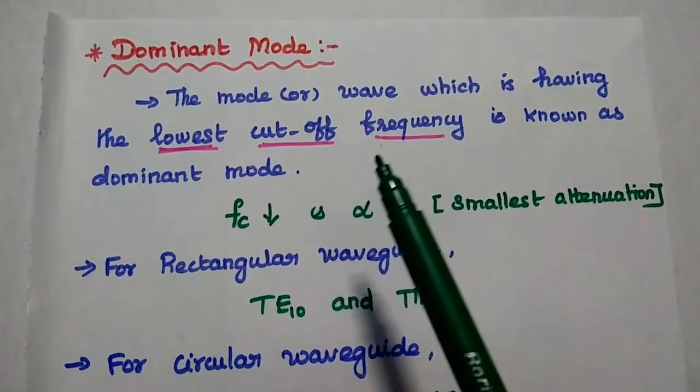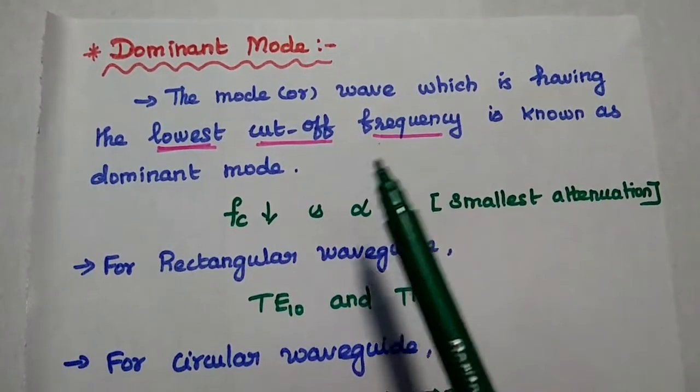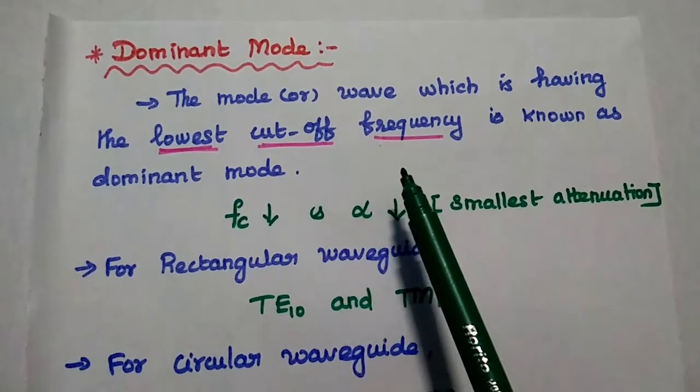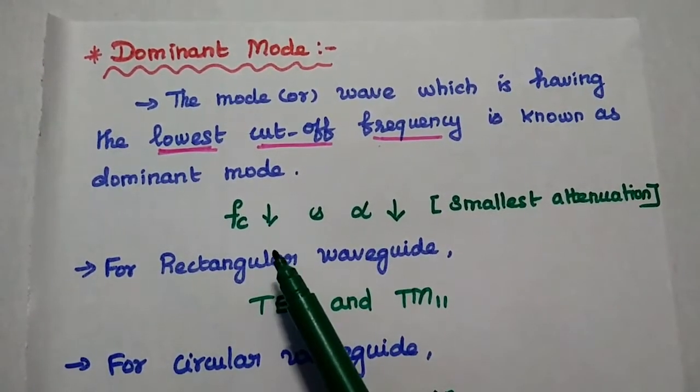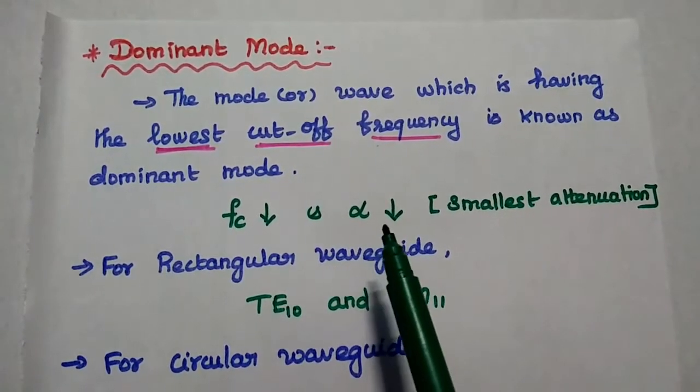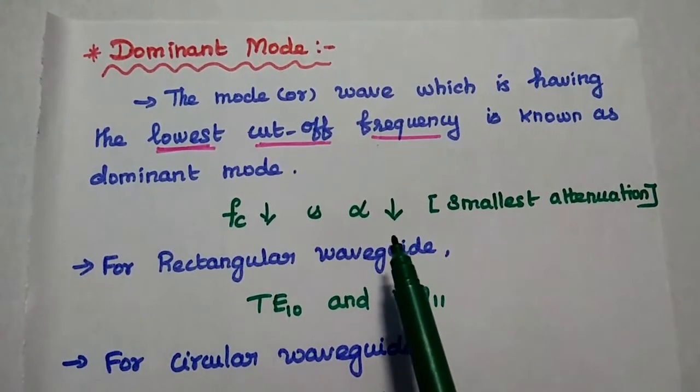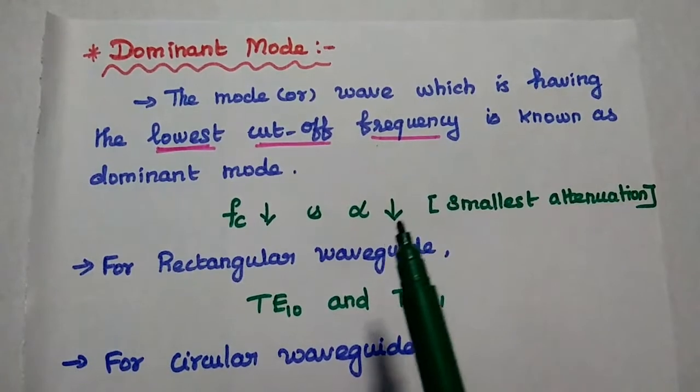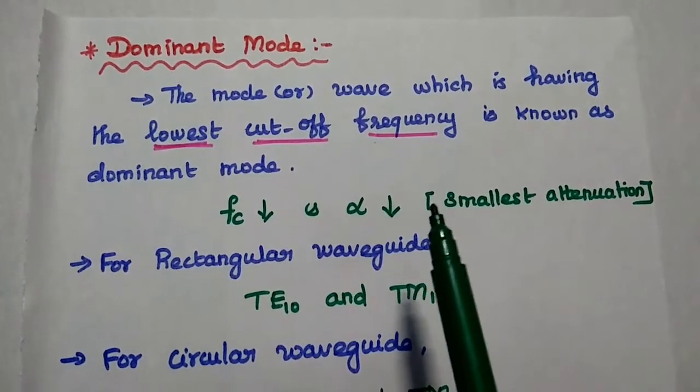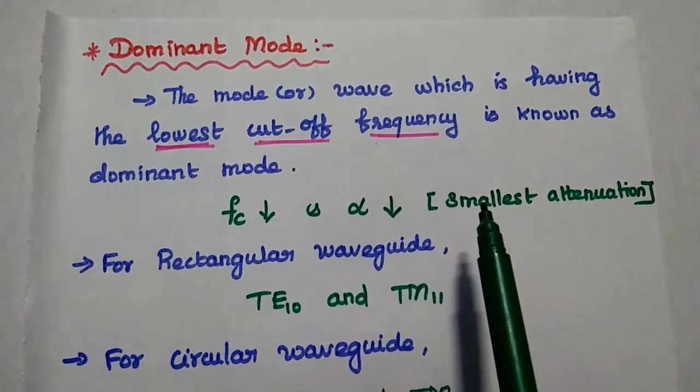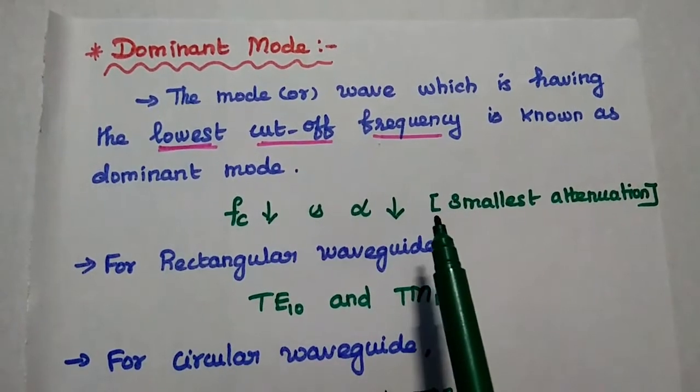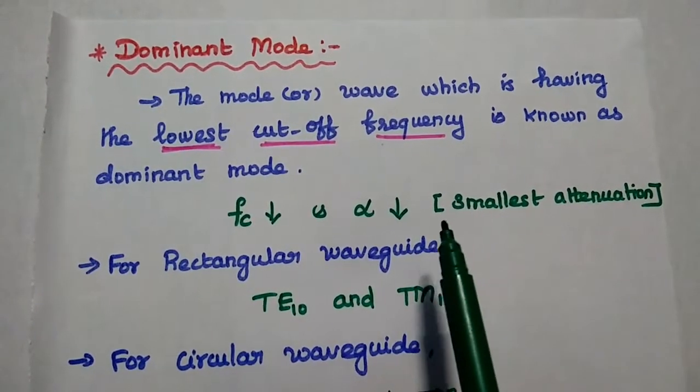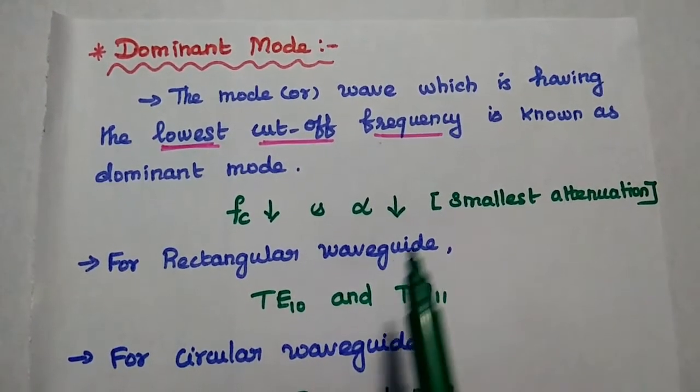It is the mode or wave which has the lowest cutoff frequency. Whenever the cutoff frequency is low, then the attenuation factor is also very low. Due to the smallest attenuation, this dominant mode provides better wave propagation in the waveguide, so we can prefer the dominant mode for better wave propagation.